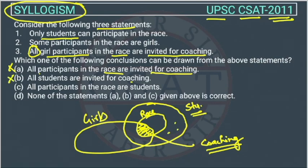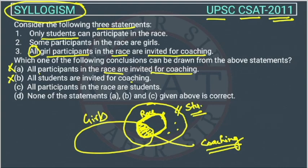Option C: all participants in the race are students. Looking at the Venn diagram, the race circle is entirely inside the student circle, so all participants in the race are indeed students. This is correct. Therefore, the answer to this question is option C.